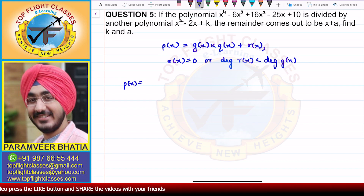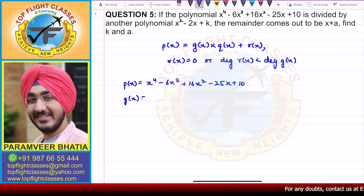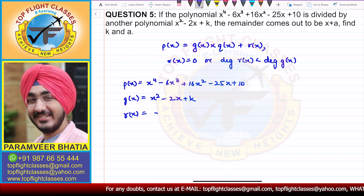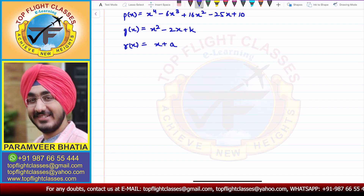So here p(x) = x⁴ minus 6x³ plus 16x² minus 25x plus 10. And g(x) is given as x² minus 2x plus k. And r(x) is equal to x plus a. Now what we'll do is divide p(x) by g(x) using the long division method.